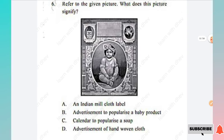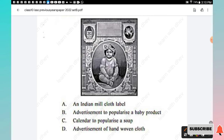Question 6: Referring to the given picture, what does this picture signify? Options are: an Indian mill cloth label, advertisement to popularize a baby product, calendar to popularize a soap, advertisement of a hand-woven cloth. The right answer is Option B, advertisement to popularize a baby product.